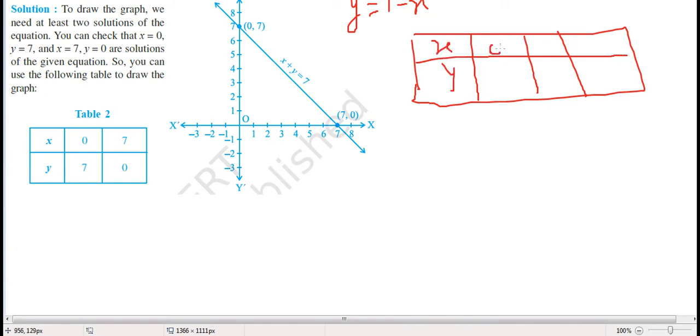For example, I will show you. So x, y: when x is equal to 0, y is equal to 7. If we put x equals 0, 7 minus 0 is 7. Now if x is 7, then 7 minus 7 is 0, so y will come as 0. If x is 1, 7 minus 1 is 6, y will be 6. If x is 2, 7 minus 2 is 5, y will be 5.